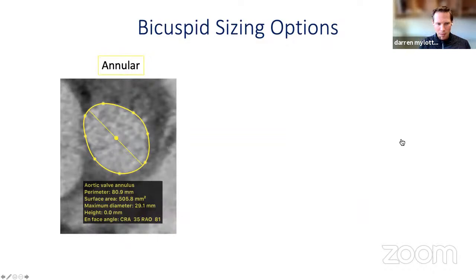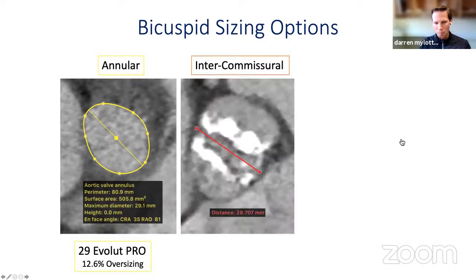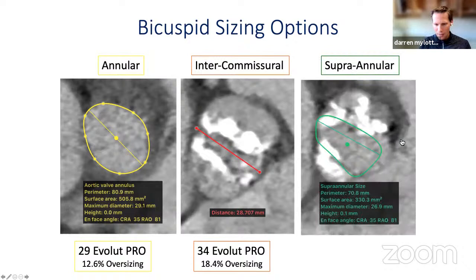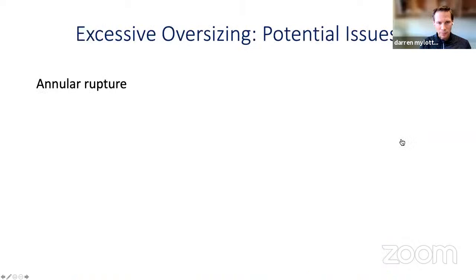Here's a case example where the perimeter is at 80.9 — this would be a 29-millimeter Evolute Pro. If we measure using intercommissural distance, that's 28 millimeters, meaning we need a 34-millimeter Evolute Pro. And if we use a supraannular spline measurement, this gives us a 26-millimeter Evolute Pro. So we have three different valve sizes for the same anatomy, depending on where we take these measurements.